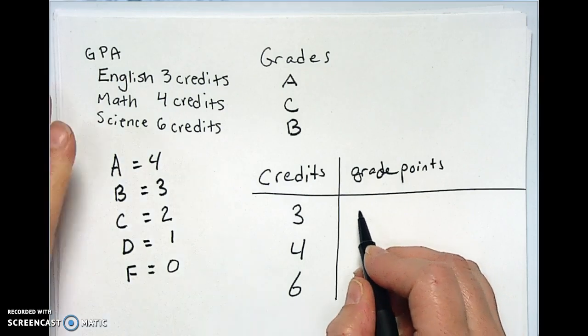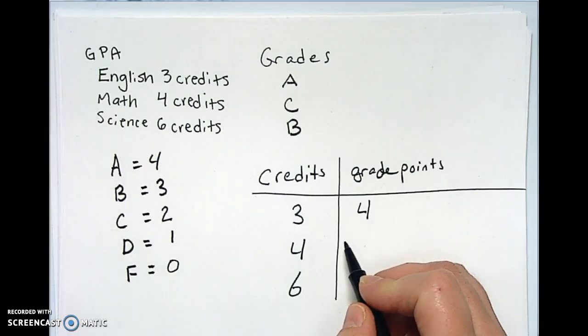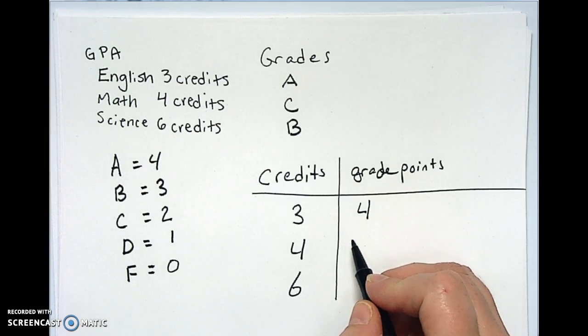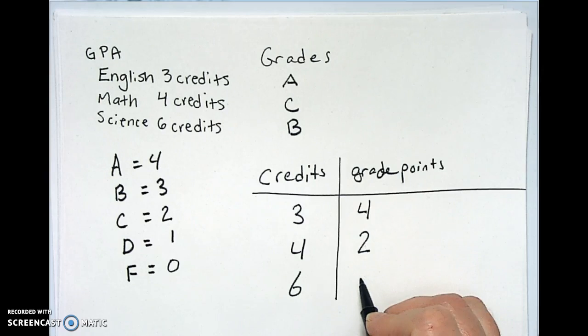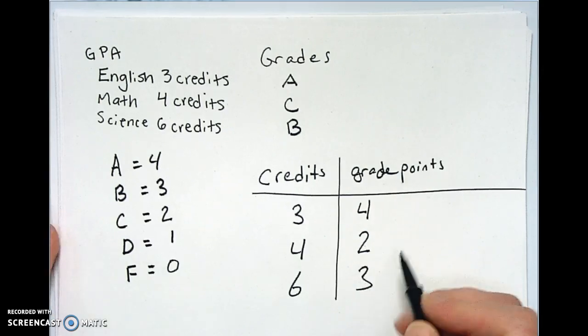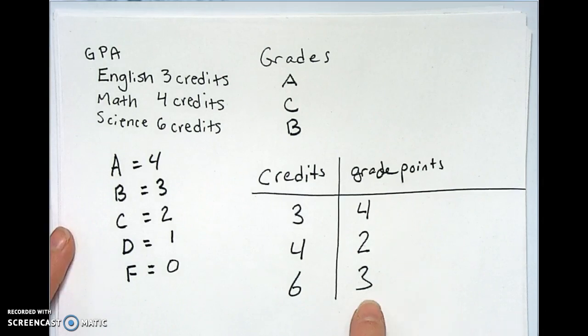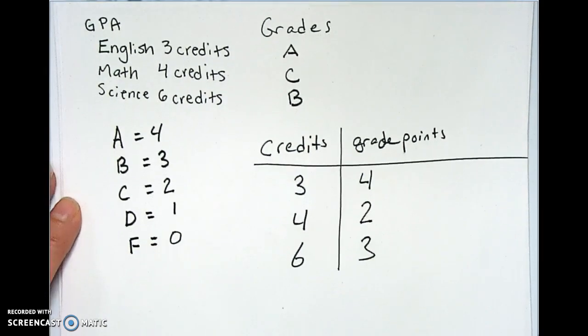Awesome, so we're going to do a four there. Four credit class math. How many points? Two. So we get two points and then a six credit class with a B is three, but it's a three for six credits. So we got six credits of three. So we could write it out kind of longhand like this, which seems kind of painful, but I think you need to see it to see what you're doing.